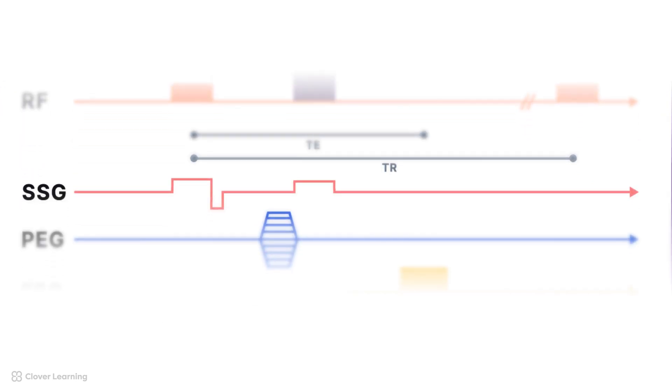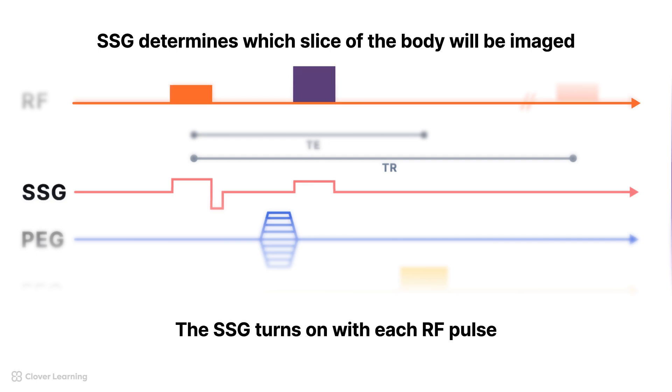The next line depicts the slice selection gradient, or SSG. You may see this labeled as G sub S. Slice selection is achieved through a gradient applied along one axis of the patient's body, typically represented by a small trapezoid or curve on the gradient channel of the diagram. This determines which slice of the body will be imaged by causing only protons in a specific region to resonate at the frequency of the RF pulse. You will also notice that the SSG turns on with each RF pulse.